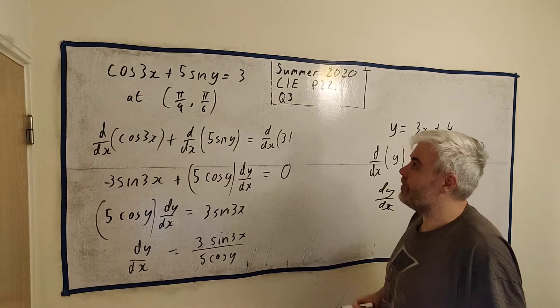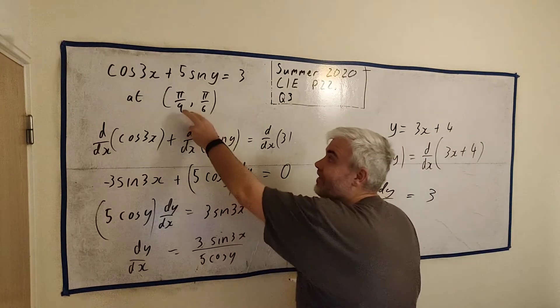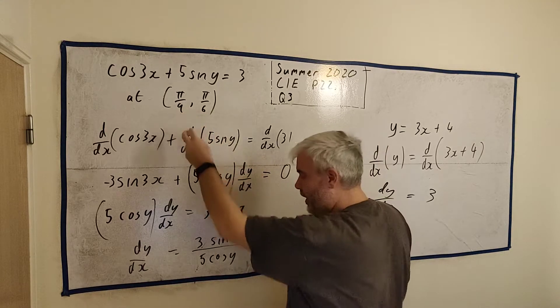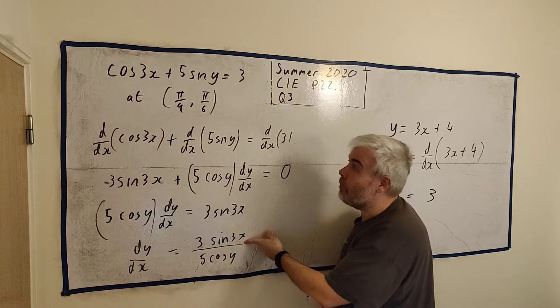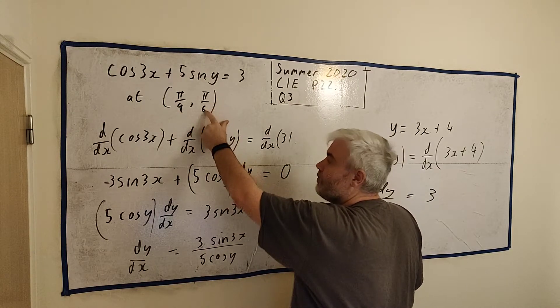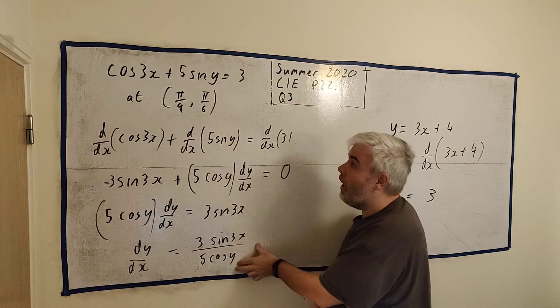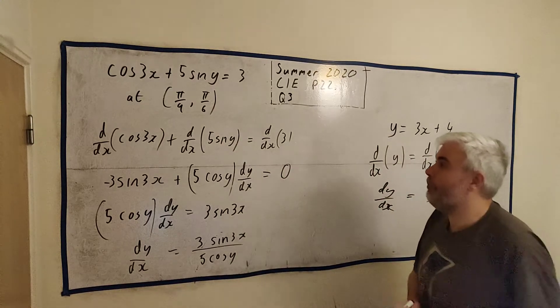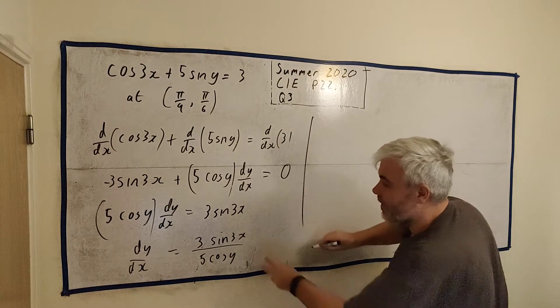But what they're looking for now is dy/dx at this point. So at this point, x is equal to pi over 9. So we just put, instead of x, we put pi over 9. At this point, y is equal to pi over 6. So we just put pi over 6 instead of y. Let me rub this out so we have a bit more room. And we'll write this again with the numbers we know exist at those points.